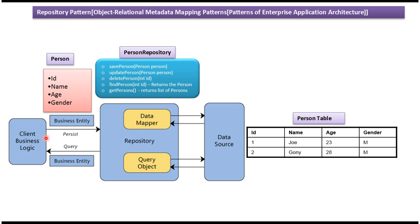Suppose the Client Business Logic wants to save a Person Entity in the Person Table. Then it will set the ID, Name, Age, and Gender, and send the Person Object to the SavePerson method. This SavePerson method in the Person Repository will get the ID, Name, Age, and Gender values from the Person Object and save the information in the Person Table.